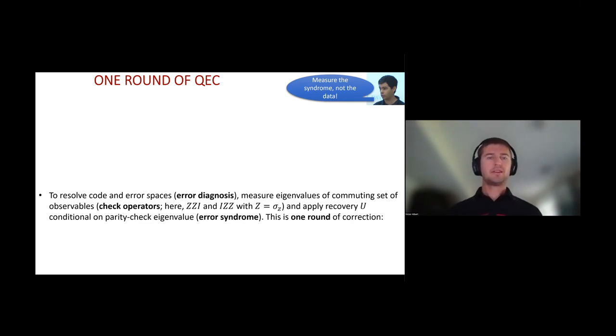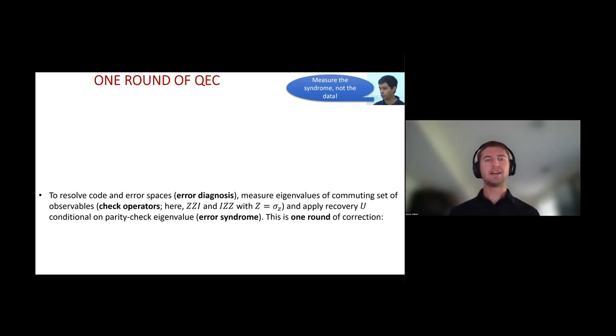We can detect errors, but now we want to correct errors. To correct errors, we need to perform what's called a round, or cycle, of quantum error correction. This cycle consists of extracting just enough information — namely information about observables that distinguish error spaces — without collapsing information within the error space or the code space. We first perform error diagnosis, which corresponds to measuring eigenvalues of check operators. For the repetition code, these are ZZI and IZZ, where Z is the Pauli matrix sigma Z. Then we decode — applying a recovery condition given which error space we found ourselves in. The error spaces are determined by eigenvalues called error syndromes. This together forms one round of error correction.